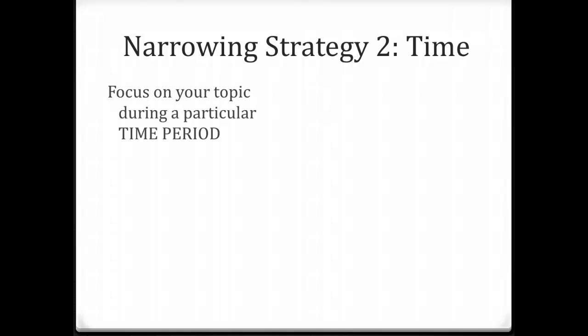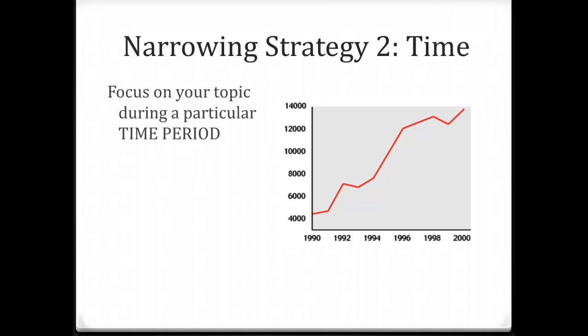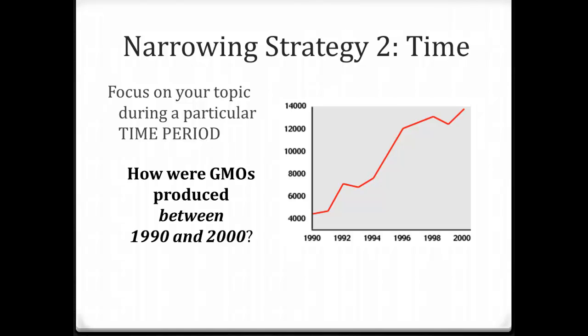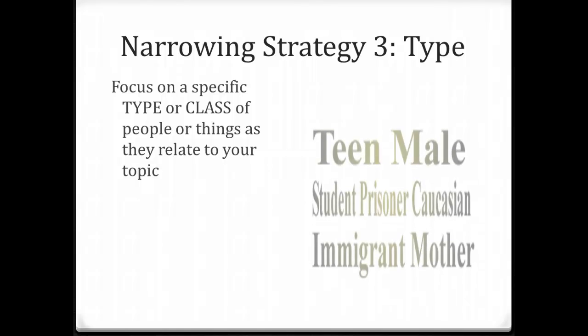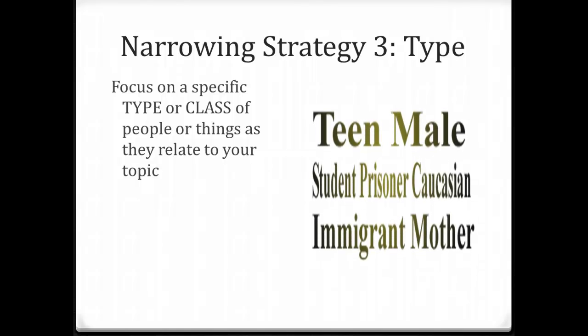Another way to narrow your topic would be to focus on a particular time period. For example, how are GMOs produced between 1990 and 2000? You can also focus your topic on how it affects a certain type or class of people or things, as in: what are GM insects?